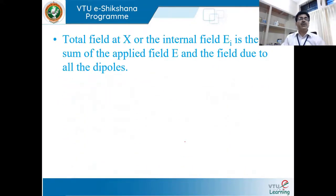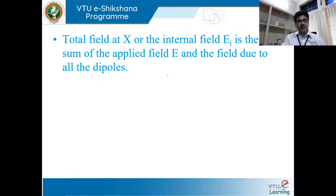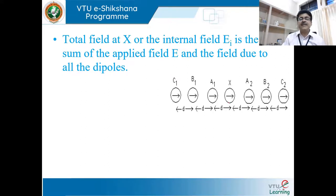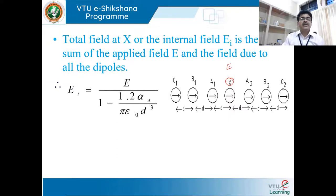We can calculate the net internal electric field. Let the total field at x, called internal field EI, be the sum of the applied electric field E and the field E' due to all the dipoles. We have applied an external electric field E and also get additional field from the neighboring dipoles. Therefore, the net electric field EI equals the applied field plus the field due to all neighboring dipoles.